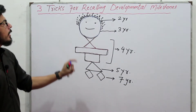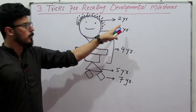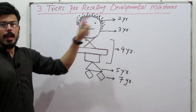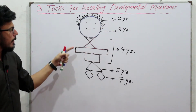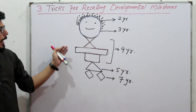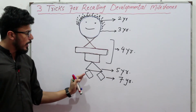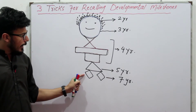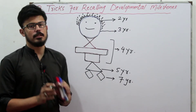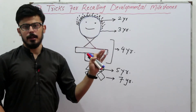So this is the simplest and easiest way to recall the developmental milestones: a normal child can draw a line or scribble at two years, a circle at three years, a cross, rectangle, and square at four years, a triangle at five years, and a diamond at seven years. Now let's come to the second trick for recalling developmental milestones.